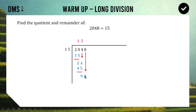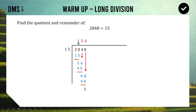Now we do one more rotation. D for Divide: 98 divided by 15. 15 goes into 98 six times with a bit left over. M for Multiply: 6 times 15 is 90. S for Subtract: 98 take away 90 is 8. And now there's nothing to drop down — our next step would be 8 divided by 15, but we can't do that because 15 is bigger than 8. So this 8 at the end is called our remainder.